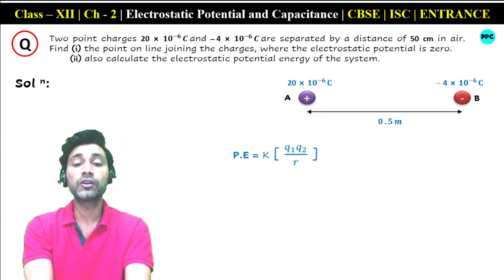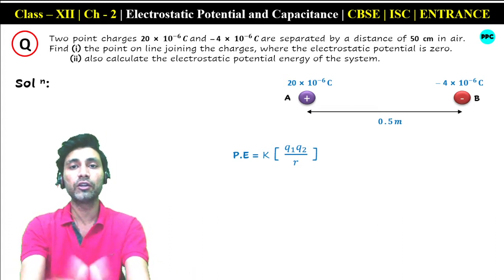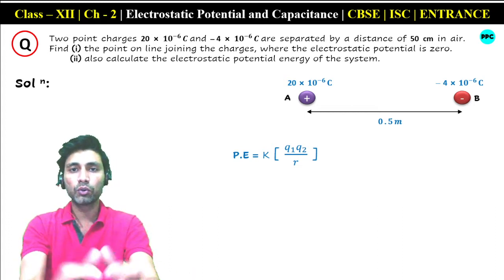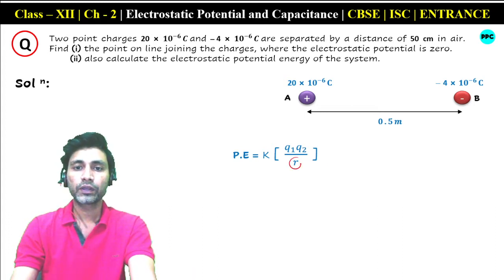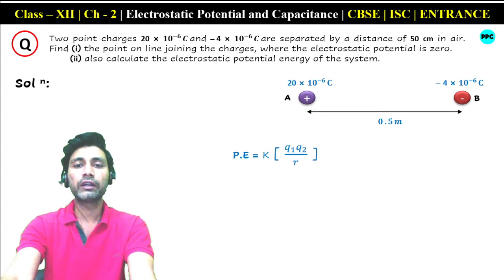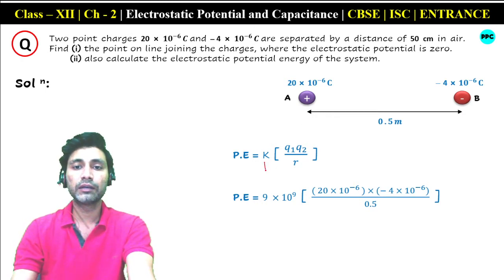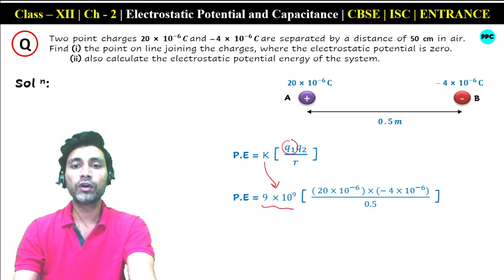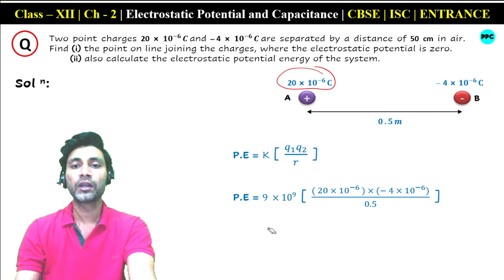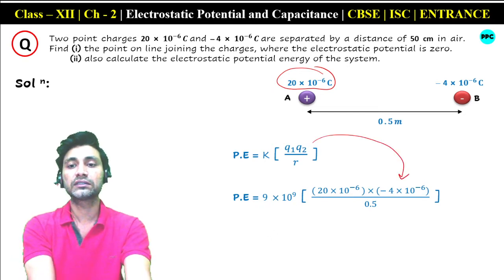The formula for potential energy is U = K Q1 Q2 / R — we need the values of two charges and the distance R between them. K equals 1/(4πε₀), which is 9×10⁹. Substituting: K = 9×10⁹, Q1 = 20×10⁻⁶ coulomb, and Q2 = minus 4×10⁻⁶ coulomb, with R = 0.5 meter.